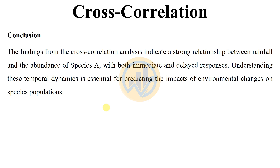In conclusion, the findings from the cross-correlation analysis indicate a strong relationship between rainfall and the abundance of species A, with both immediate and delayed responses. Understanding these temporal dynamics is essential for predicting the impact of environmental changes on species populations.